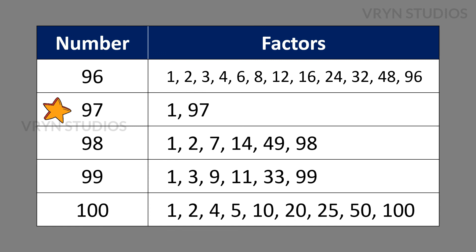The factors for the number 97 is 1 and 97. The factors for the number 98 is 1, 2, 7, 14, 49 and 98. The factors for the number 99 is 1, 3, 9, 11, 33 and 99.